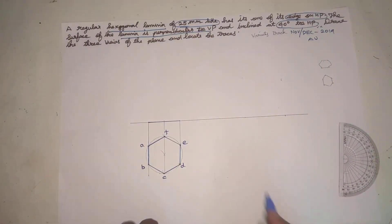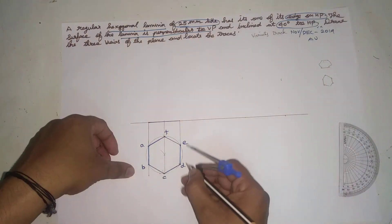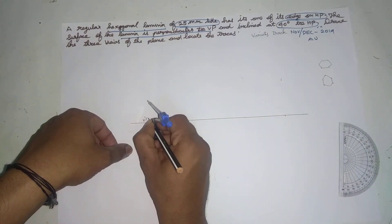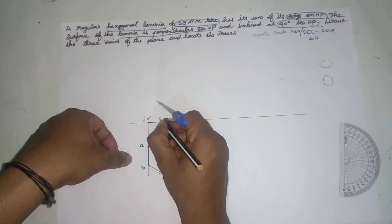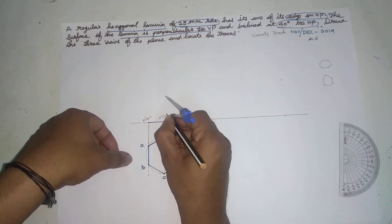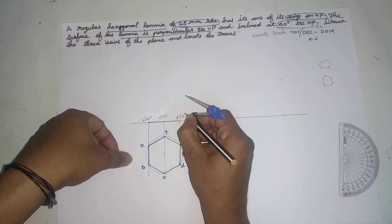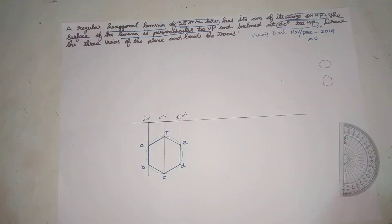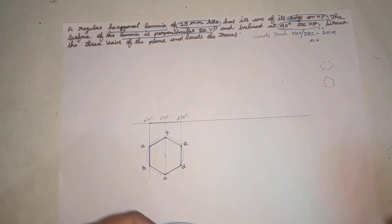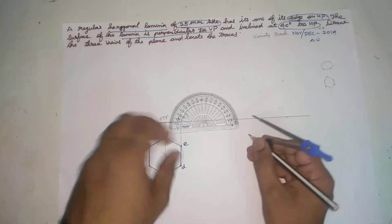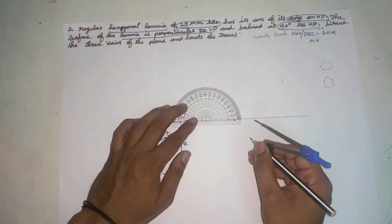Let's look at the front view. If you look at the name, you can see B, C, and D. A bracket — B bracket is A, C bracket is F, D bracket is E. This is 40 degrees to the HP. HP is 40 degrees to the HP.